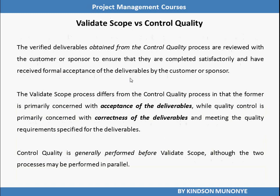There is a clarification I would like to make about Validate Scope and Control Quality. They have some similarity, but take note of the subtle differences between them. The Verified Deliverables obtained from the Control Quality process are reviewed with the customer or sponsor to ensure that they are completely satisfactory and have received formal acceptance. The Validate Scope process differs from the Control Quality process in that, for Validate Scope, we are concerned with acceptance of deliverables, while Control Quality is primarily concerned with correctness of the deliverables and meeting the quality requirements. Control Quality is generally performed before Validate Scope, although the two may be performed in parallel.